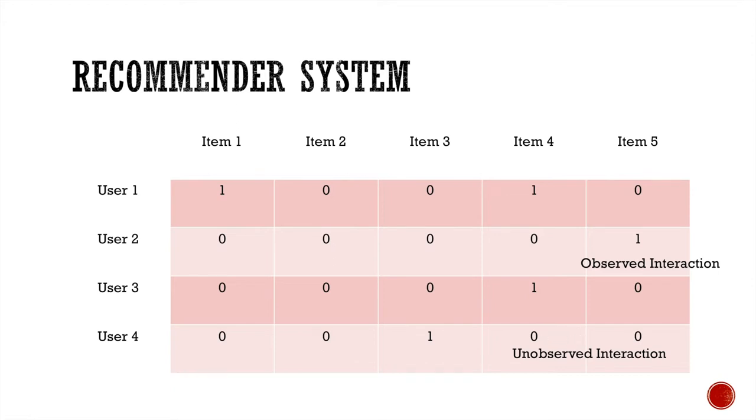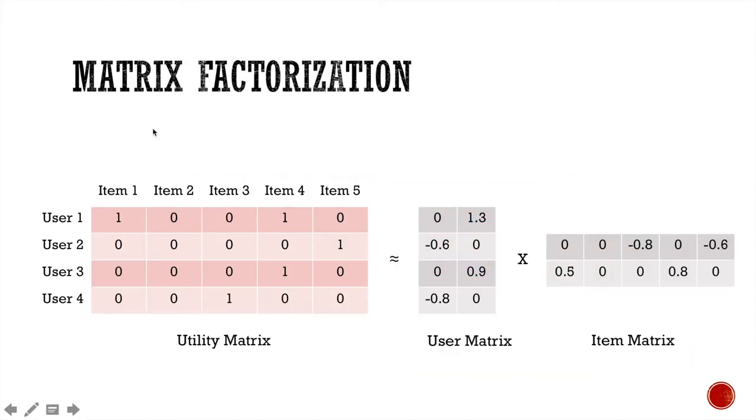What we want to know is that, among all the unobserved interaction items, which of them the user are most likely to interact with? A traditional way to solve the recommender system problem is matrix factorization.